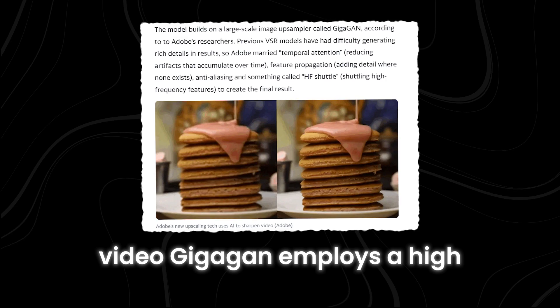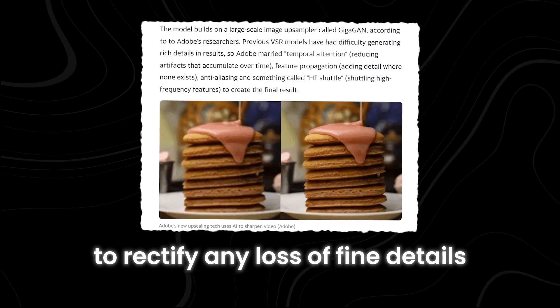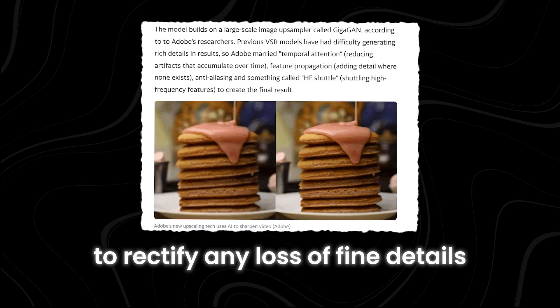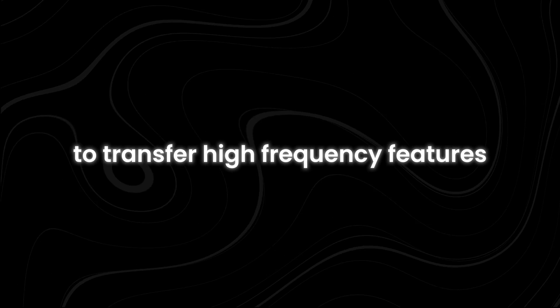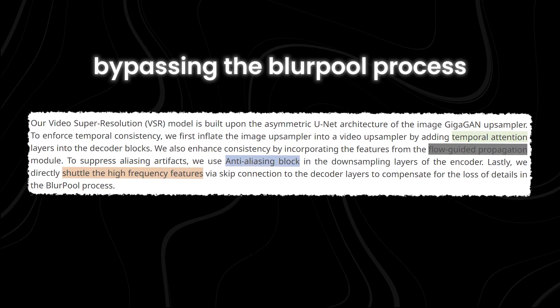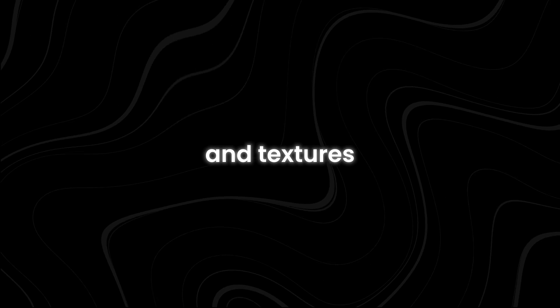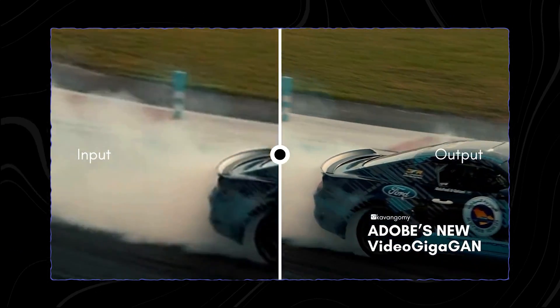To wrap up the process, Video Gigagan employs a high-frequency feature-shuttle mechanism to rectify any loss of fine details due to the anti-aliasing process. This shuttle mechanism works by using skip connections to transfer high-frequency features from the encoder directly to the decoder, bypassing the blur-pool process. By doing so, the shuttle ensures that all the fine details and textures in the input video are preserved, resulting in a final video output that is incredibly crisp, clear, and visually stunning.